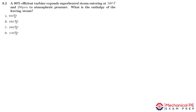A 90% efficient turbine expands superheated steam entering at 500 degrees and 200 psia to atmospheric pressure. What is the enthalpy of the leaving steam? If you're doing these problems in order, this is a great one to try on your own. It's very similar to the previous problem, with the only difference being that instead of looking for delta h actual, we're looking for the enthalpy of the leaving steam, which is just h2 actual or h2 prime.